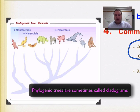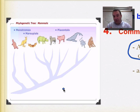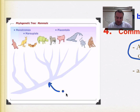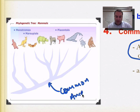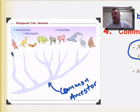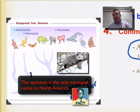All the organisms shown on this phylogenetic tree are mammals — they have fur, produce milk, and most give birth to live young. The line at the base represents the common ancestor, essentially the first mammal. The first group to diverge from that line are the monotremes — egg-laying mammals — represented here by the platypus.